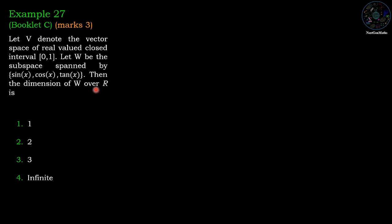Then the dimension of W over R is: first option 1, second option 2, third option 3, fourth option infinite.